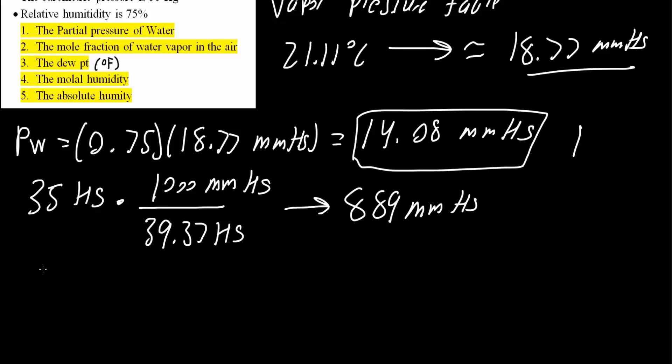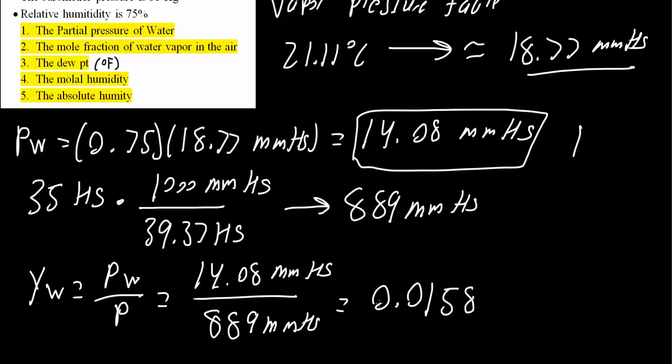From here, we will calculate our mole fraction. Yw equals Pw divided by pressure. We have Pw was 14.08 mm Hg divided by pressure, which was 889 mg of mercury. So the mole fraction of water vapor in the air equals 0.0158. This is number two.